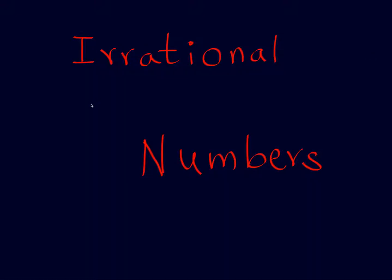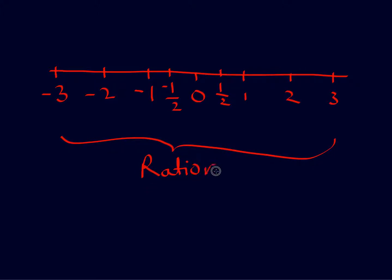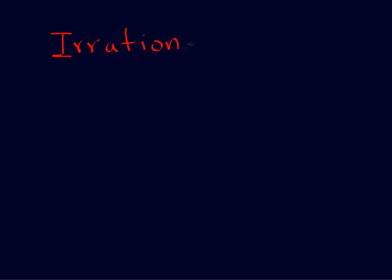Let us look at irrational numbers. We saw what rational numbers are — on a number line you have integers, both positive and negative, and fractions or quotients, again both positive and negative. These numbers are called rational numbers. More formally, these numbers can be expressed as P over Q, where Q is not equal to zero. However, there are some numbers on the number line that are irrational — that is, not rational numbers.